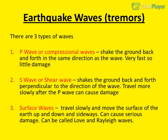Earthquake waves, or tremors, come in three types. P waves, or compressional waves, shake the ground back and forth in the same direction as the wave — they are very fast and cause little damage. S waves, or shear waves, shake the ground back and forth perpendicular to the direction of the wave; they travel more slowly after the P wave and can cause damage. Surface waves travel slowly and move the surface of the earth up and down and sideways — they can cause serious damage and are also called love and Rayleigh waves.